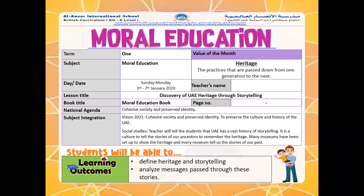Assalamu alaikum, Grade One. Welcome to the moral education lesson of term two. The new value of the month of January is heritage — that means the practices that are passed down from one generation to the next. The lesson title for this lesson is 'Discovery of UAE Heritage Through Storytelling.'